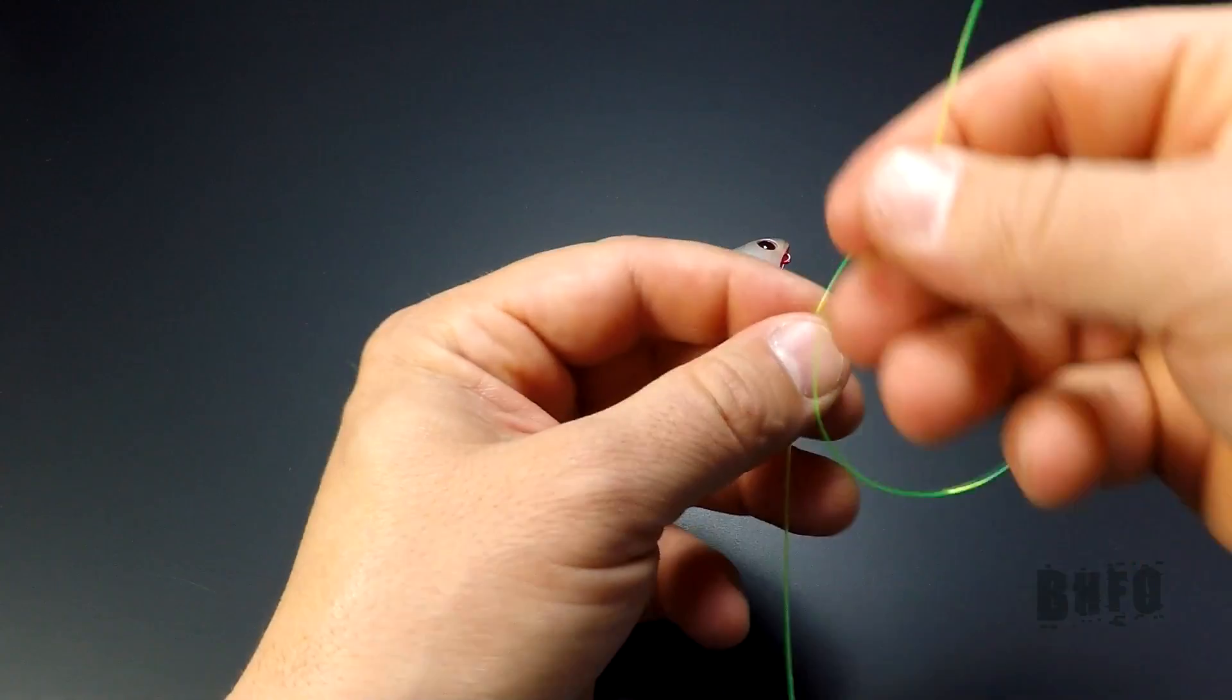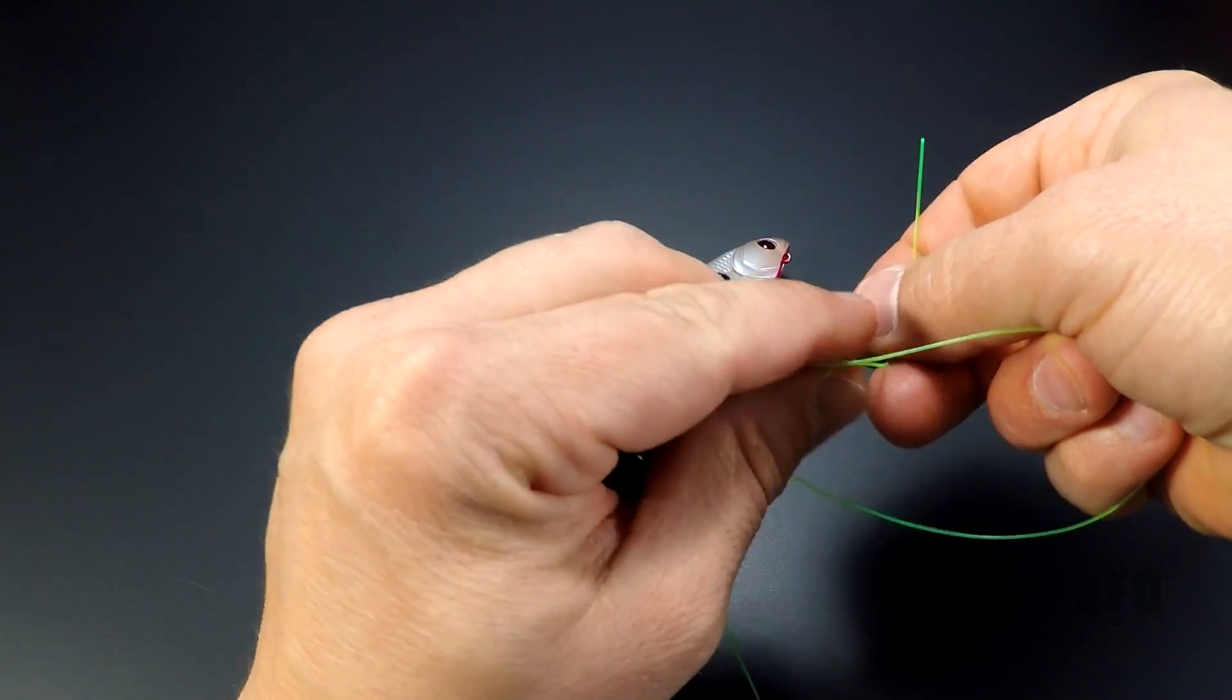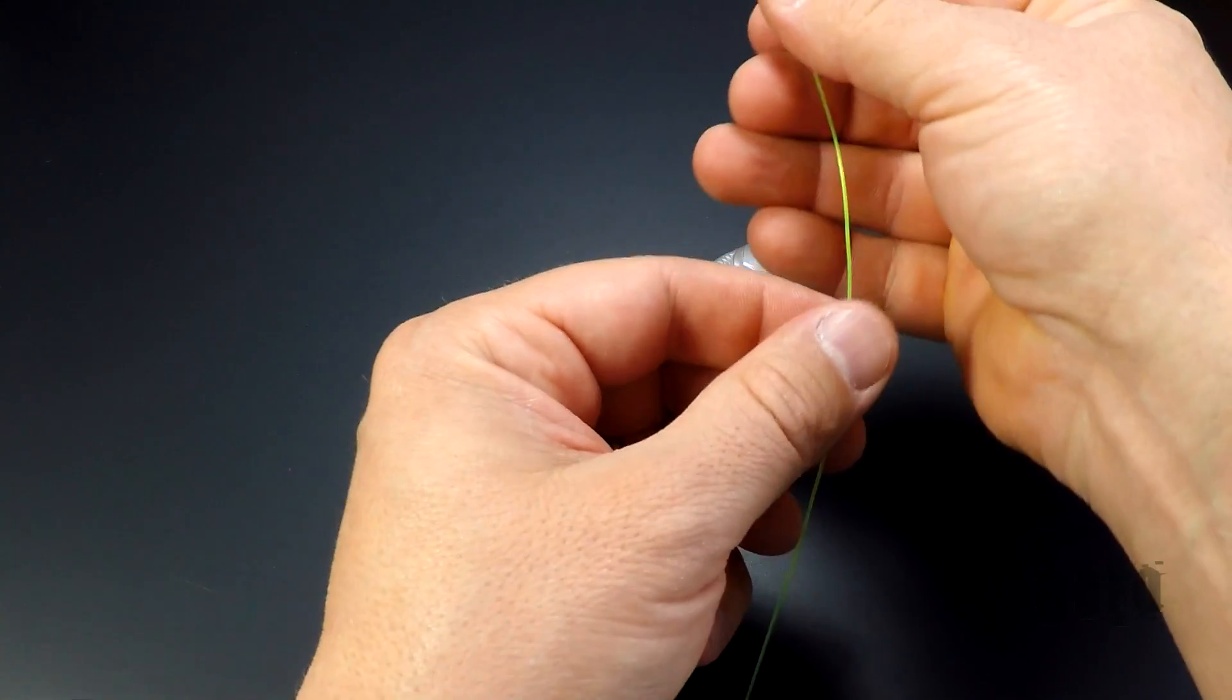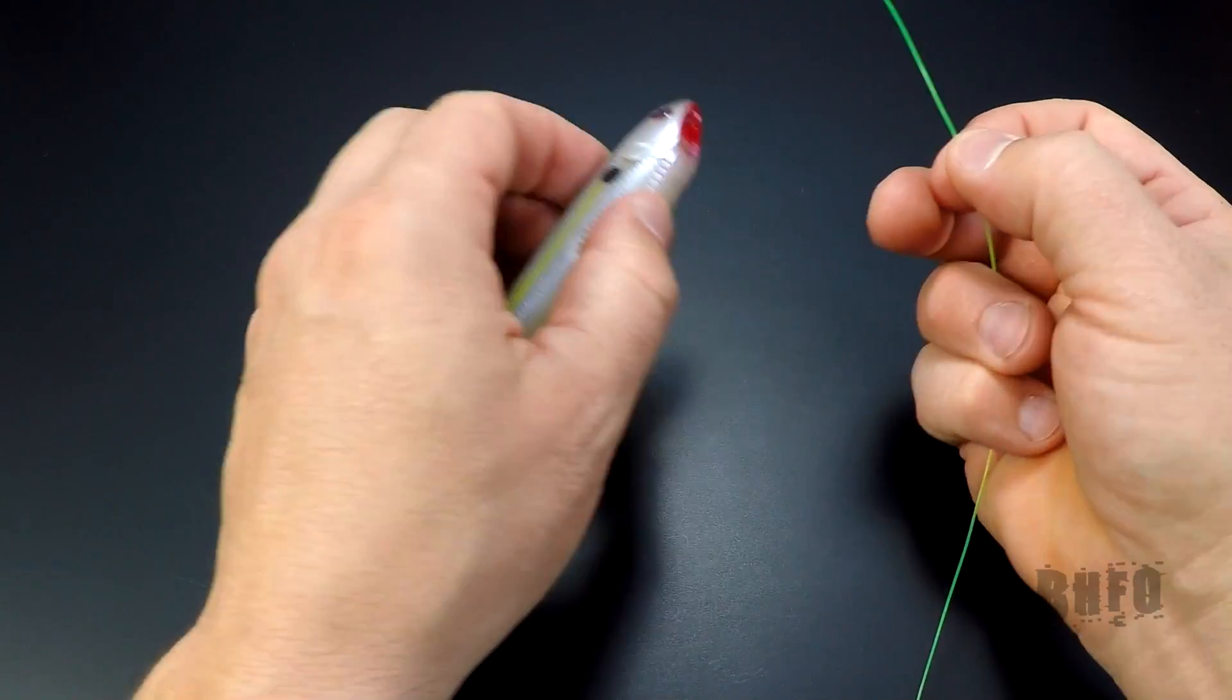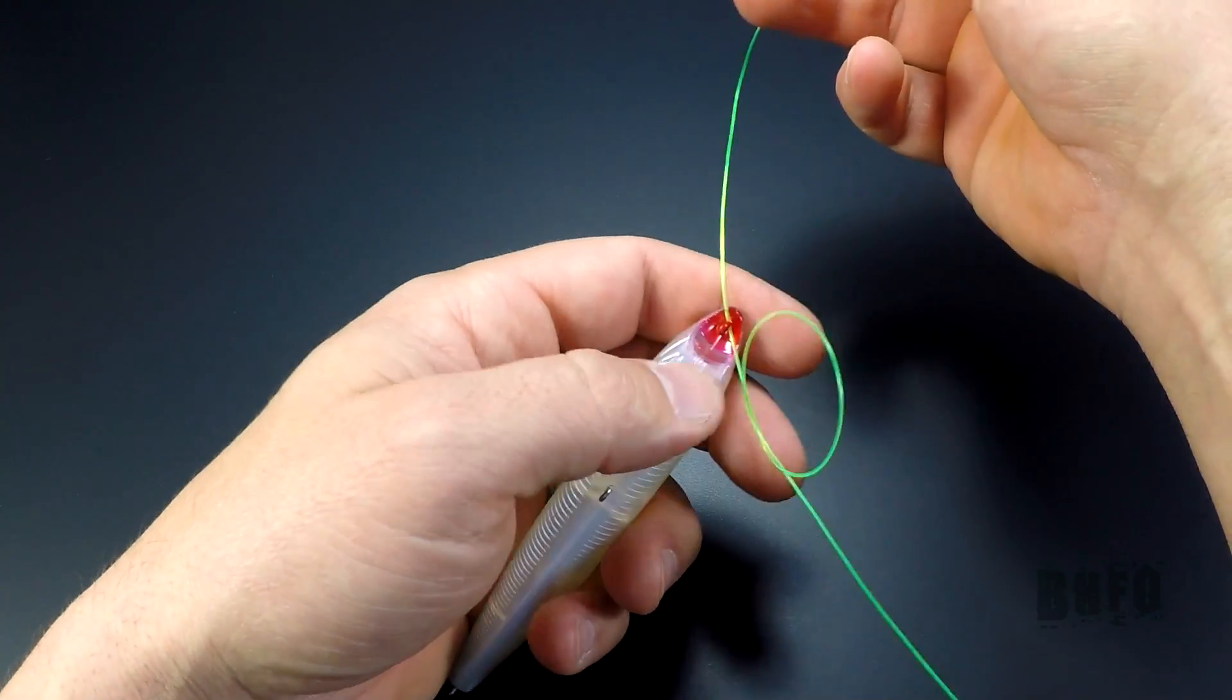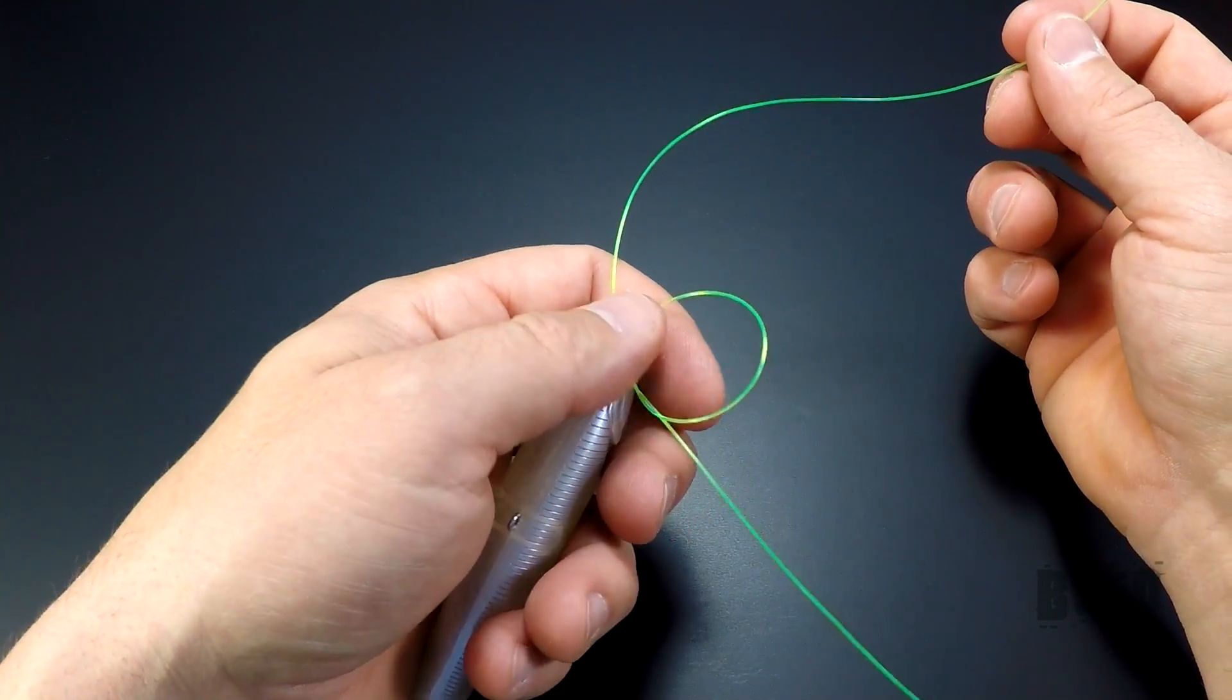Take the line and tie an overhand knot about 10 to 12 inches from the end of the line, leaving it open enough to fit your index finger. Put the tag through the eye of the lure and pull all the way to the overhand knot.